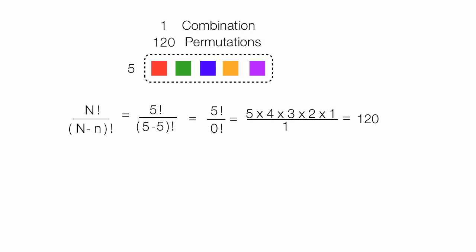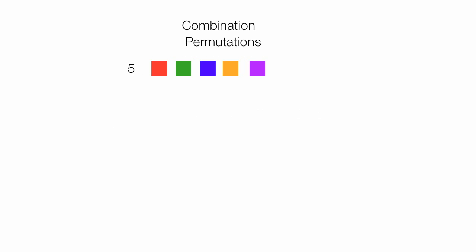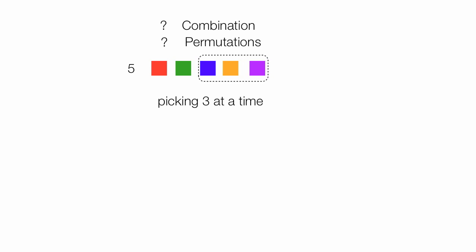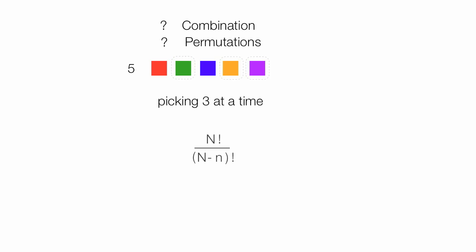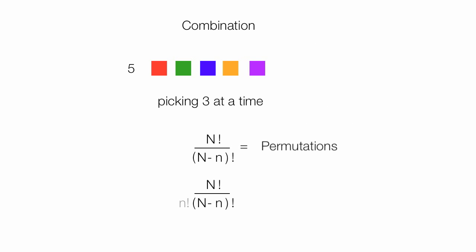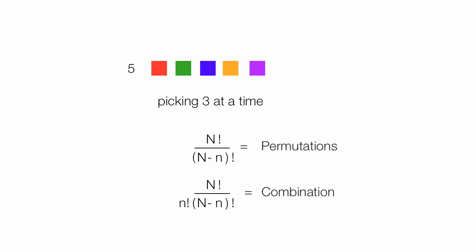In the next video, I'm going to talk about how to calculate permutations and combinations if I have five objects and pick three at a time — maybe those three, or those three, or some in the middle like the green, yellow, and purple ones. I'll use two different equations: this one for permutations and this one for combinations — I just added that one little thing. I'll discuss this in detail in the next video.